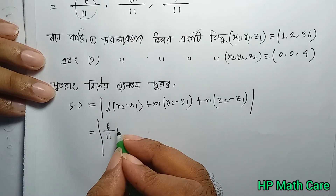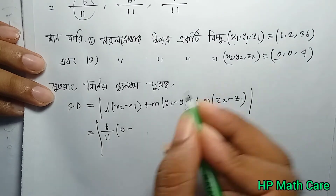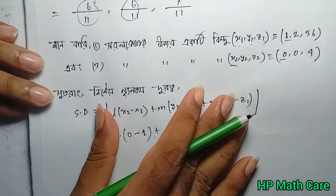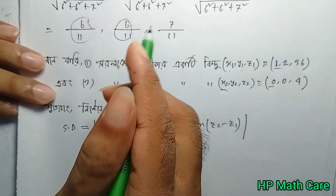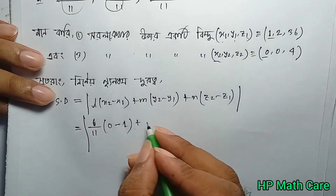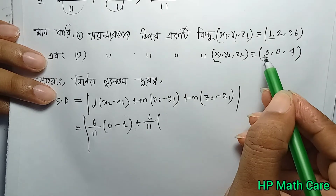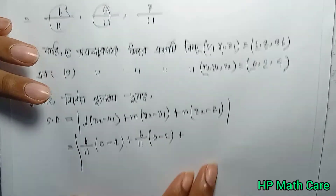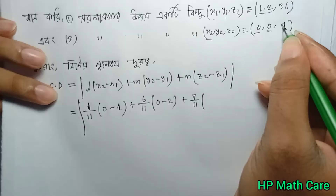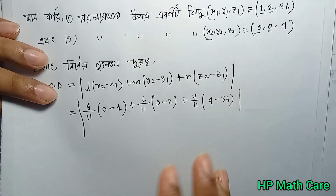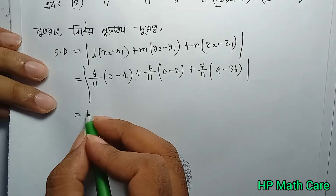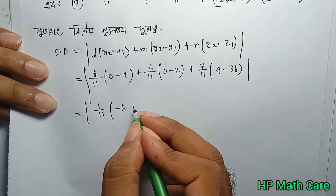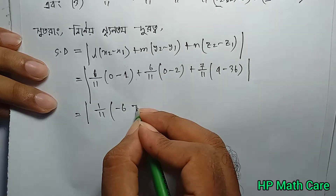So x2 is 0, minus x1 is 1. With the cosines l, m, n: six by eleven. Why y2 minus y1: y2 is 0, y1 is 0, so zero minus two. Plus n into the value: seven by eleven, seven to two meaning twelve.